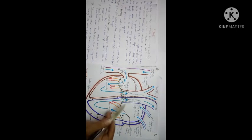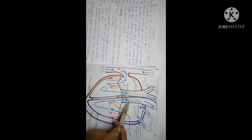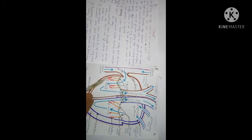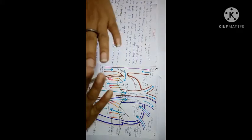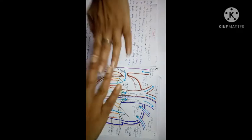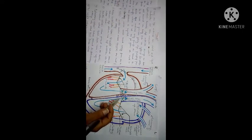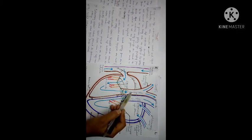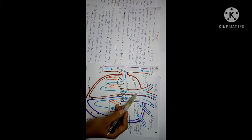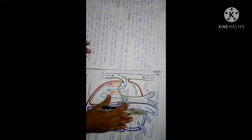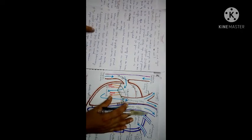Next is the aortic valve, located in the aorta. Its cusps open downward and then close, then open and close again. Next is the pulmonary valve, located in the pulmonary artery — also known as the semilunar valve because its shape is like half a moon.